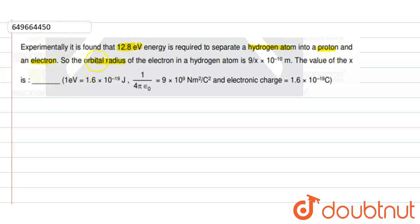So, the orbital radius of the electron in a hydrogen atom is given as 9 by x times 10 to the power minus 10 meter. We need to find the value of x here.